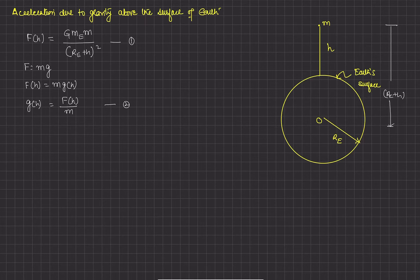Now from equation one and two, gravity at a height h will be F_h upon m, which gives us G times M_e upon (r_e plus h) squared. So this is equation number three.